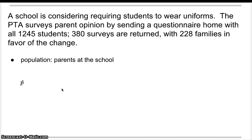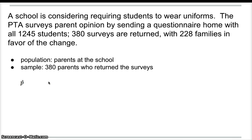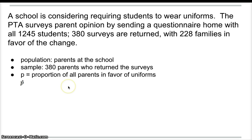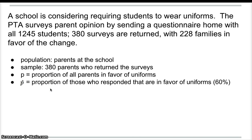So the population is parents at that school, because it's only worrying about that school. The sample is the 380 parents who actually returned the surveys. The P is the proportion of all parents at that school in favor of uniforms. The sample P-hat is the proportion of those who responded that are in favor of uniforms, which was 60%.